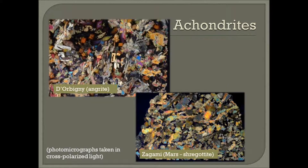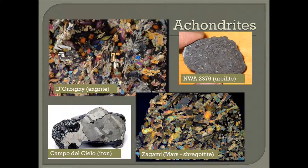Achondrites are igneous rocks or breccias of igneous rock — fragments from differentiated asteroids and from planetary bodies such as Mars and the Moon. With achondrites particularly, the use of terms such as class and clan have been poorly applied. In total, there are 23 group divisions with only seven groups tied to two clans. Iron meteorites are believed to be remnant cores of differentiated asteroids.